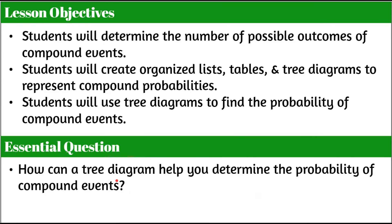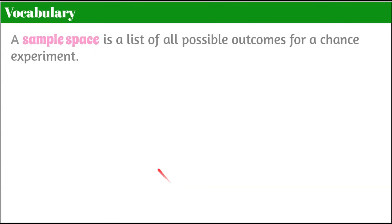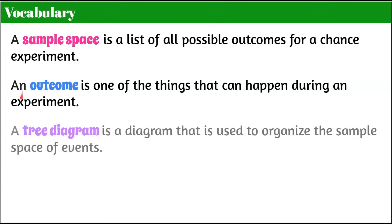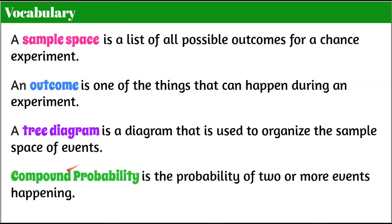So we're going to learn to create tree diagrams for a useful purpose. Here's our vocabulary before we begin. A sample space is a list of all possible outcomes for a chance experiment. An outcome is one of the things that can happen during an experiment. So a sample space is an organized way to show all the outcomes. A tree diagram is a diagram used to organize the sample space of events, so a tree diagram is a type of sample space. And our last term, compound probability, is the probability of two or more events happening. We'll discuss this more in the lesson.